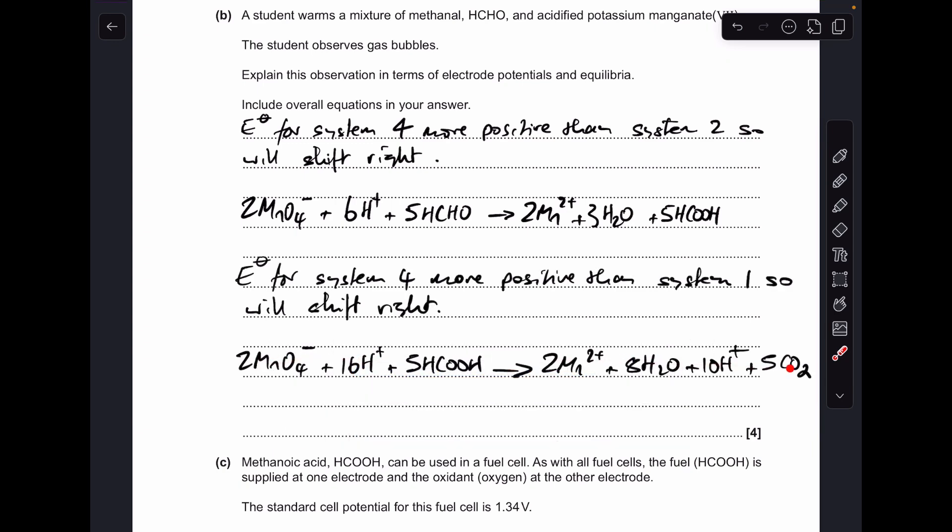So there's the overall equation for the second step. Obviously, we're going to tidy this up. And that's why the student sees bubbles, because carbon dioxide is produced, and we'll just need to look at the common species. It's just the H-plus ions in this case, so we've got 16 on the left, 10 on the right, so we're going to end up with 6 on the left.